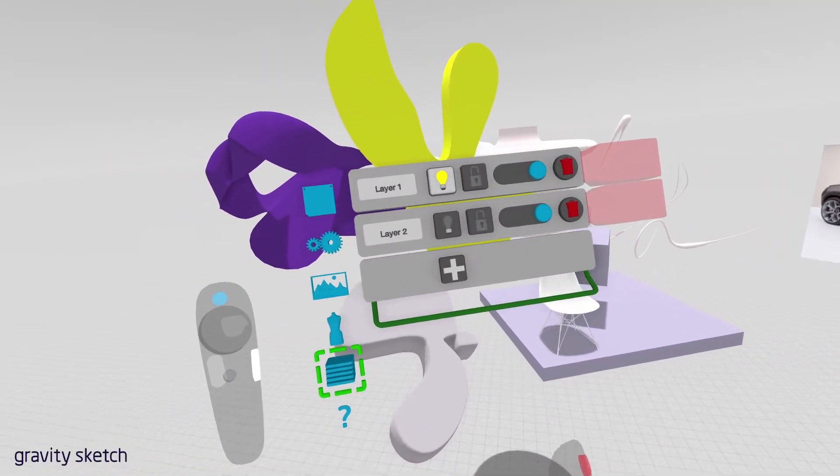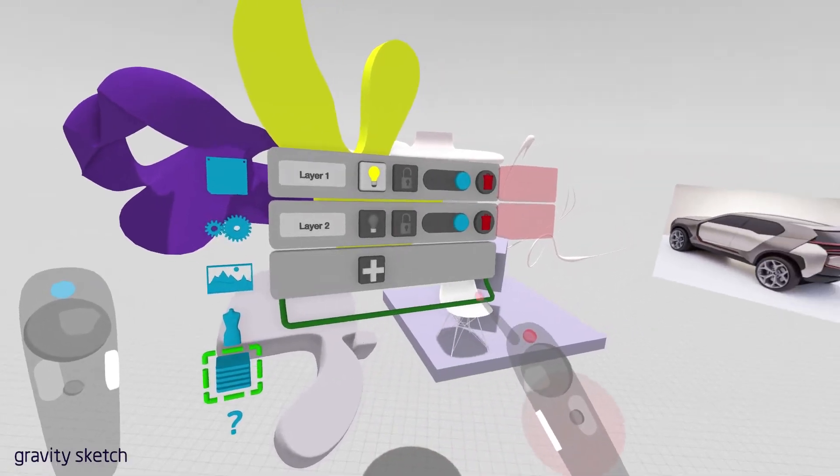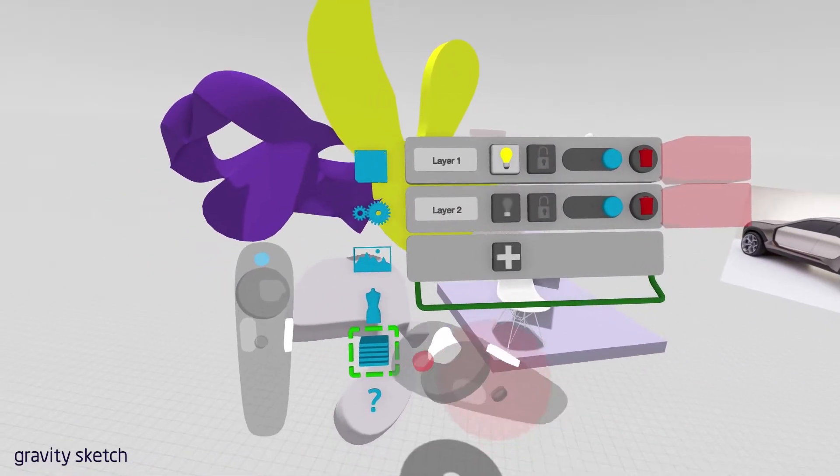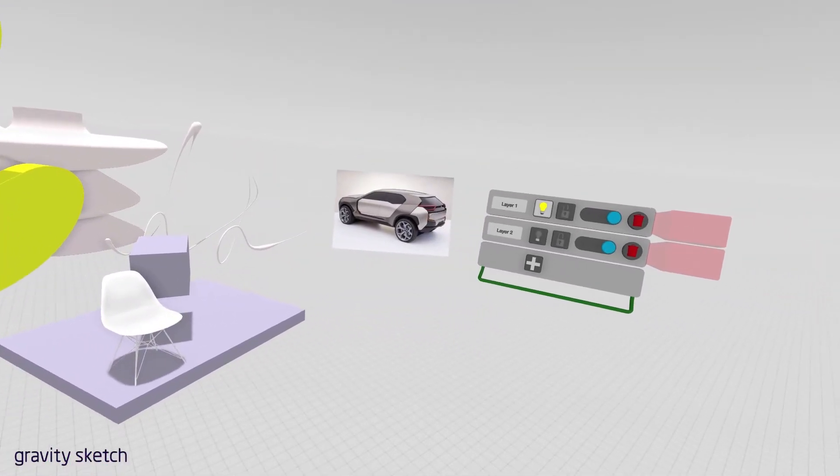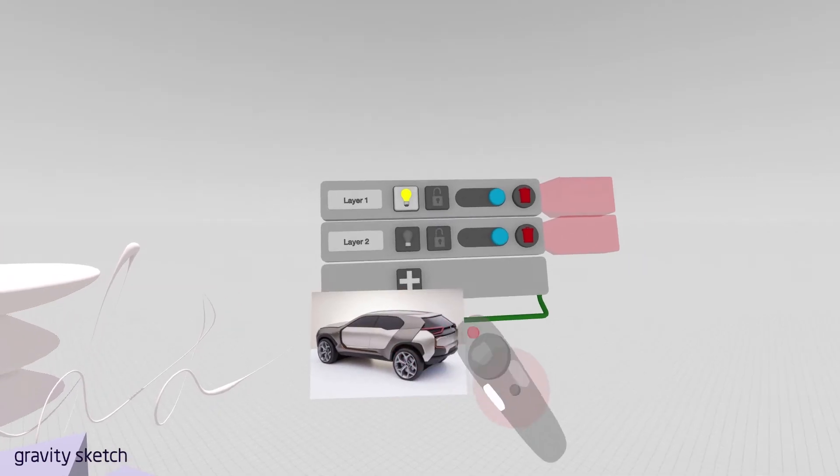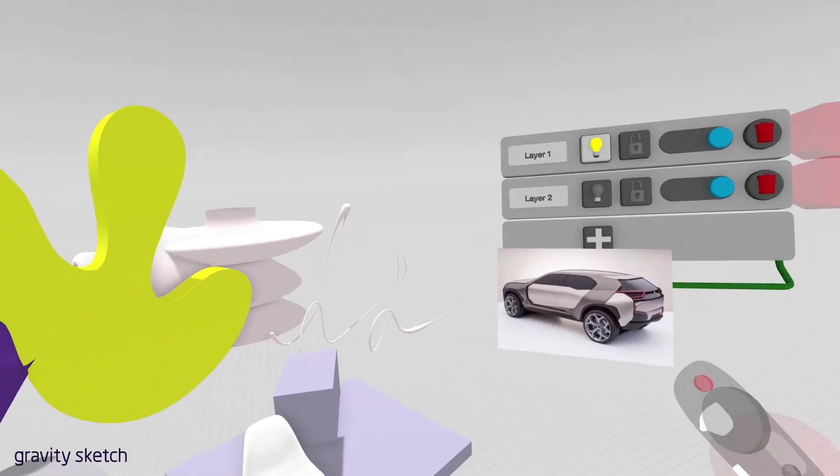We have a great layer system here as well. So anything that you see with a green bar along the bottom, that means you can grab it and move it off of your hand. So we'll grab this layer system and move it off of our hand. You can also scale it up just a bit. And right now we have 2 layers.